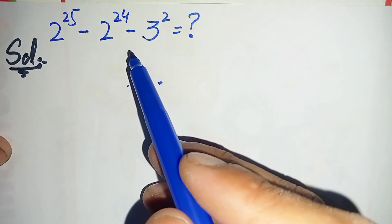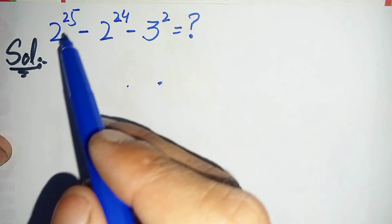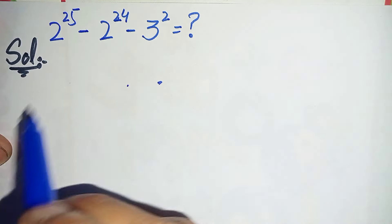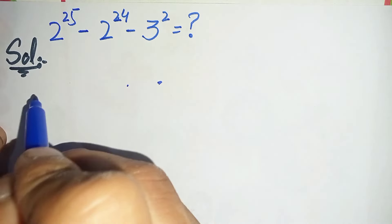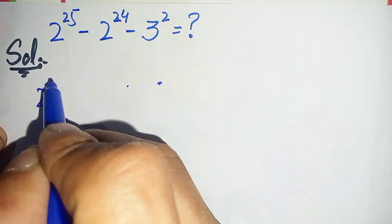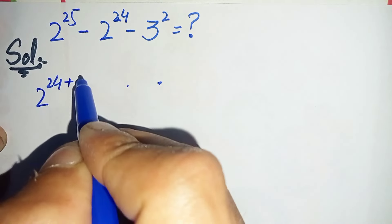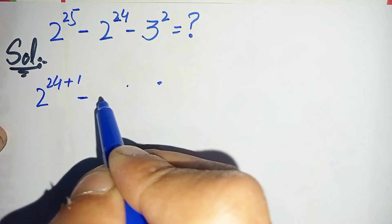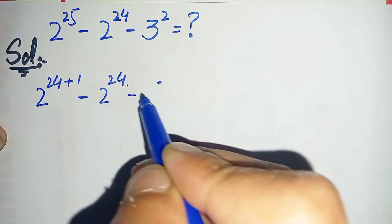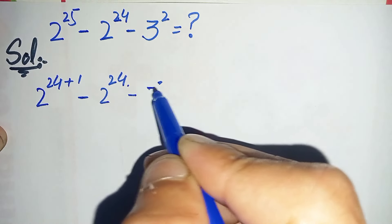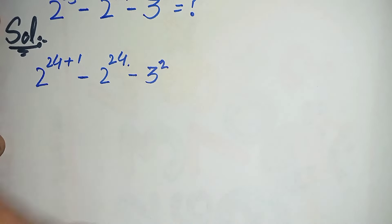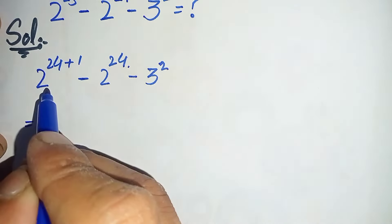First of all, we will change this power 25 to the sum of 24 plus 1. So we can write this equation as 2 raised to power 25, which can be written as 2 raised to power 24 plus 1, minus 2 raised to power 24, minus 3 square.